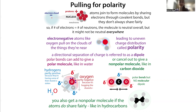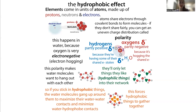Water is a great example of polarity because the oxygen is electronegative — it hogs those electrons — and this makes it so that the oxygen is going to be partly negative and the hydrogen partly positive.